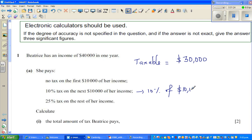You don't need a calculator. 10% is only one tenth. So if you divide this by 10, she's paying $1,000 as tax for the first $10,000. If you take away $10,000 from $30,000, you get $20,000.